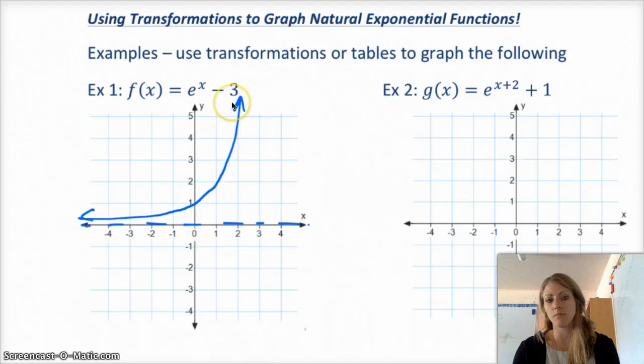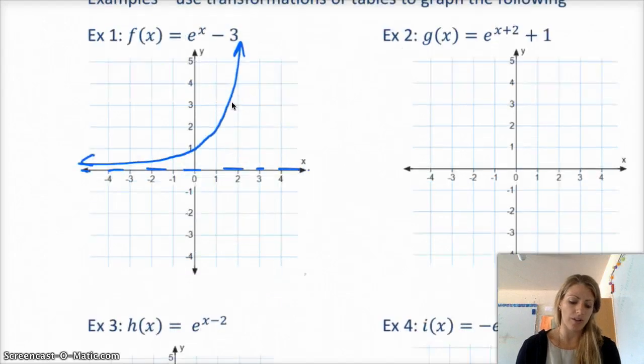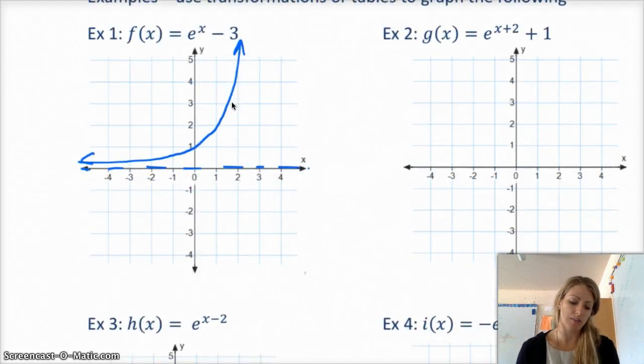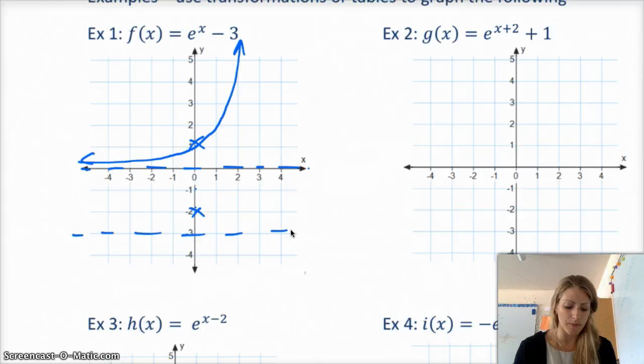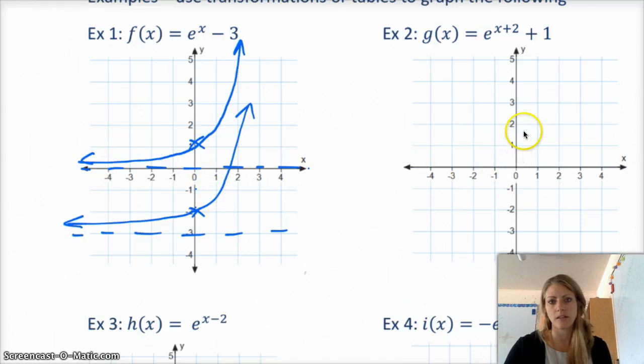So then, I can take e to the x, and minus 3 moves it down 3, so all that does is it changes that point that was 0, 1, that moves down 3, so 1, 2, 3, down to negative 2, so it goes through the y-axis at negative 2. And the asymptote, which was at the x-axis is now down at negative 3. But it still looks pretty much the same, right? It's just shifted down 3 units.